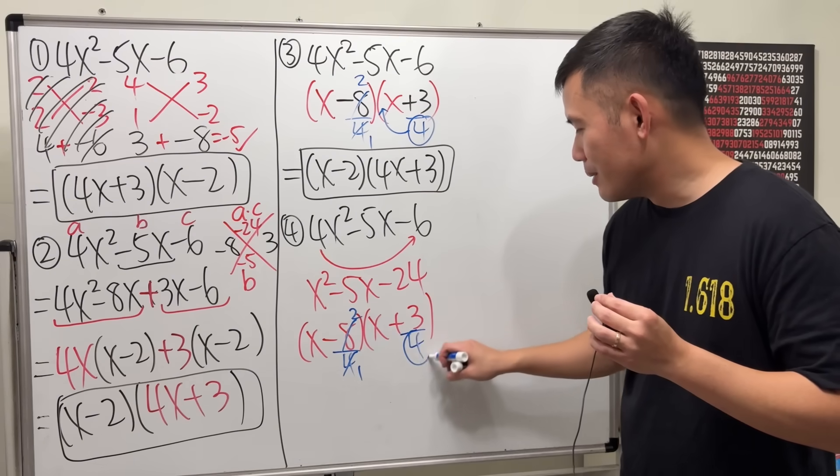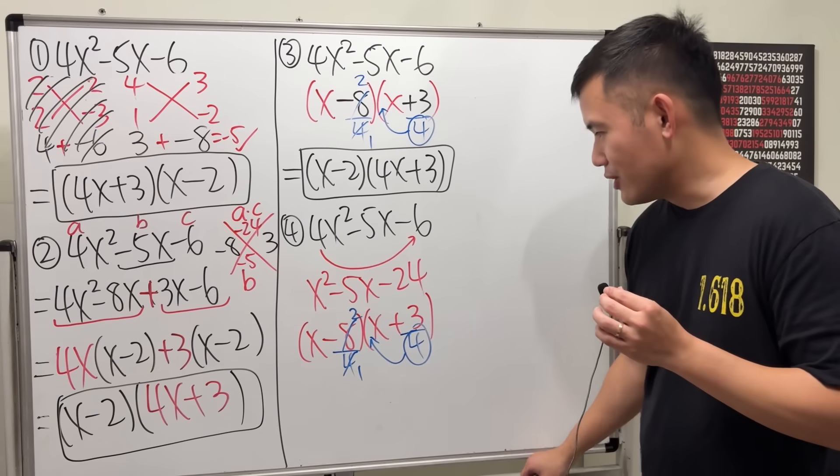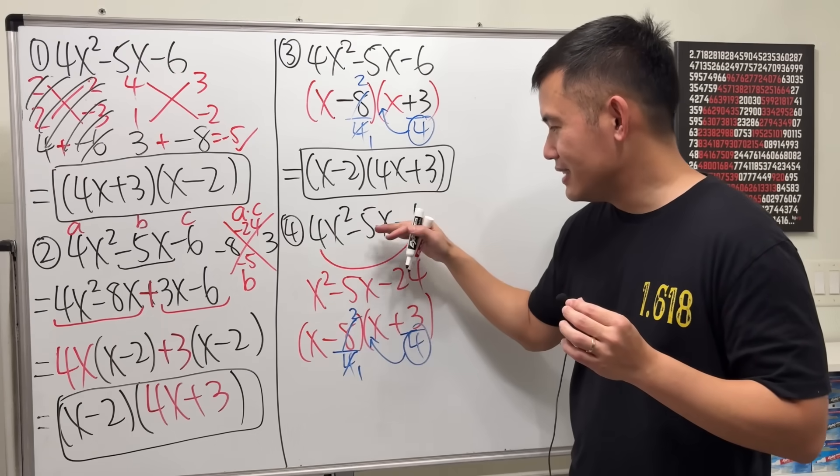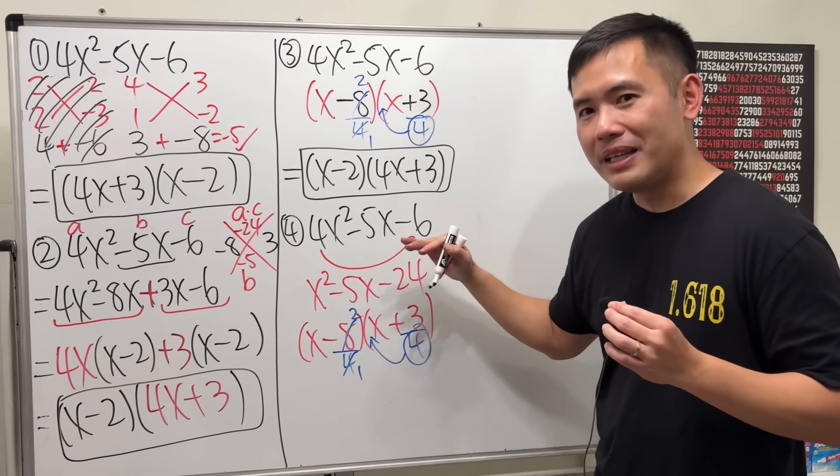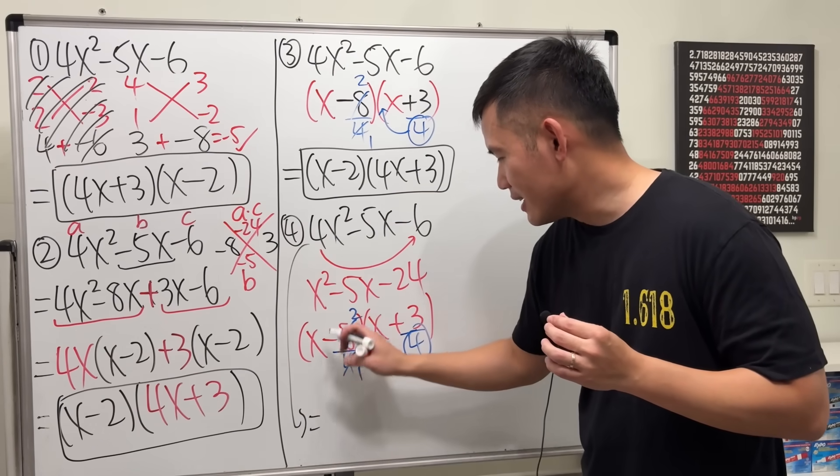Can we reduce? No. But, put down whatever the denominator. Here. And ladies and gentlemen. I didn't put on equal signs because this is technically not equal to that. But, it will help us to factor it. I'll tell you. The answer is again. x minus 2 times 4x plus 3.